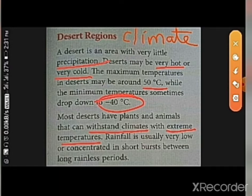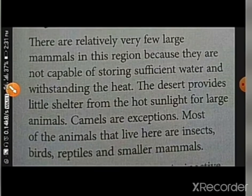Rainfall in desert regions is usually very low or concentrated in short bursts between long rainless periods — meaning rainfall is very low and occurs only for very short periods. This is the climate of the desert region.